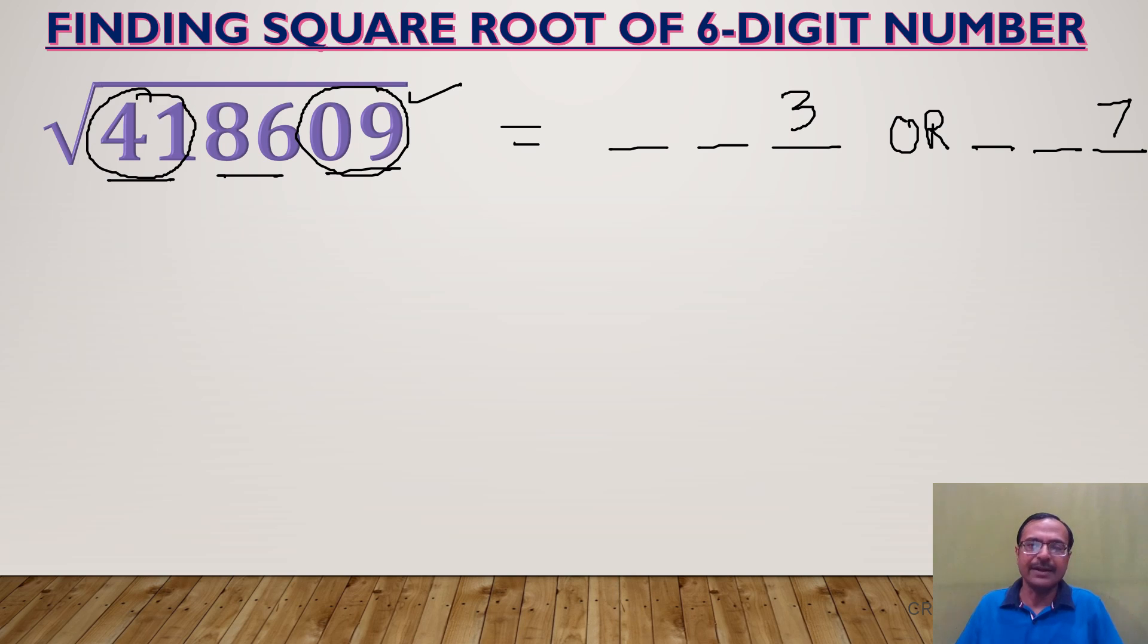Now look at the first two digits, 41. Which is the perfect square which lies very close to 41 but just below it? It is 6 square, 36. So that 6 forms the first digit.